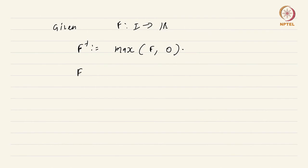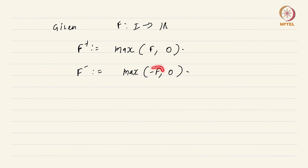Similarly, you define f⁻ with a slight twist: you take the maximum of minus f and 0. Notice what happens for f⁻: whenever f is positive, this function will be 0. Whenever f is negative, minus f becomes greater than 0, so this max becomes minus f. So whenever f is negative, f⁻ takes the absolute value of f. This discussion should have already made obvious that f is nothing but f⁺ minus f⁻. And exactly one of f⁺(x) or f⁻(x) is greater than 0 when |f(x)| is not equal to 0, and the one that is positive has the value |f(x)|.